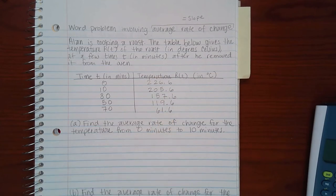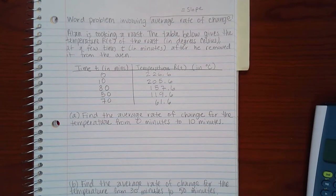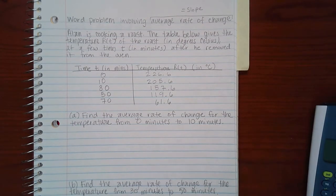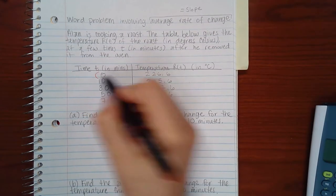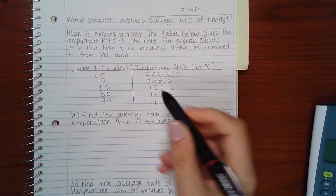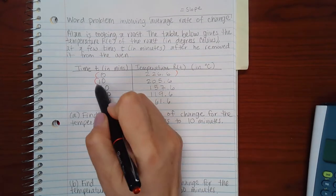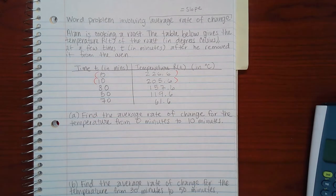It says part A: find the average rate of change for the temperature from zero minutes to ten minutes. So what that means is I'm going to be looking at these coordinates from zero and ten, these two.